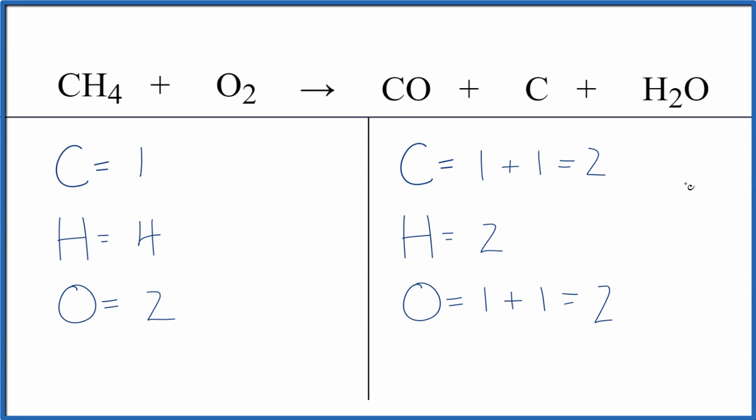Let's balance the equation here for the incomplete combustion of methane, CH4. So we have our CH4 plus O2. We get CO plus C plus H2O, carbon monoxide, carbon, and water. This is one possible set of products you could get for this incomplete combustion here.